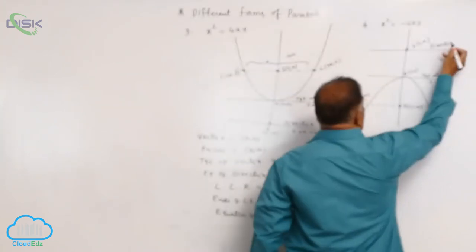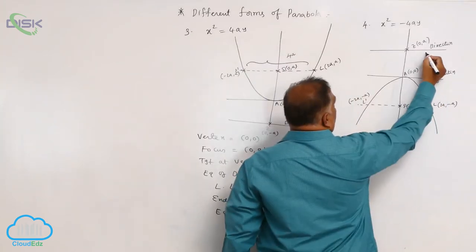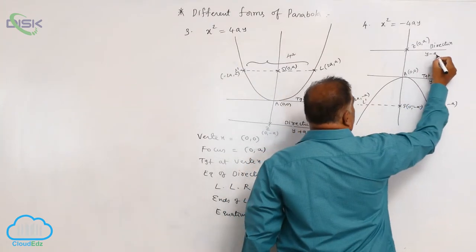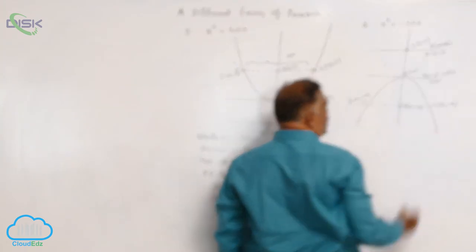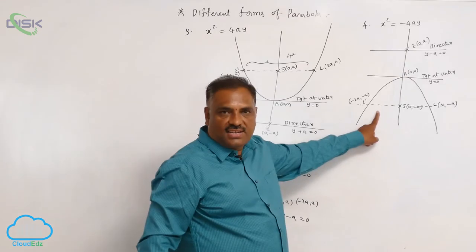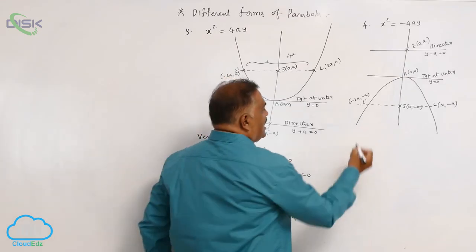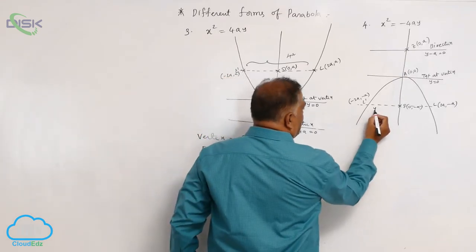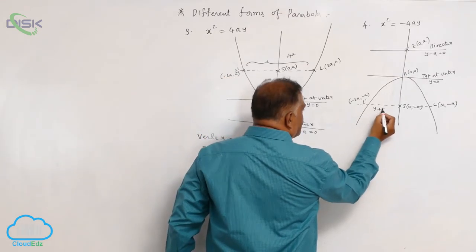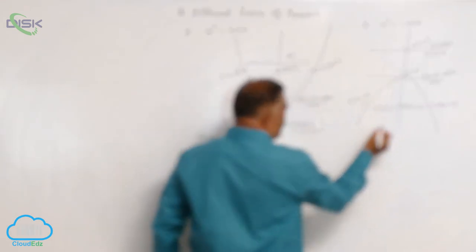The directrix is given by y - a = 0. The equation of the latus rectum is y + a = 0.